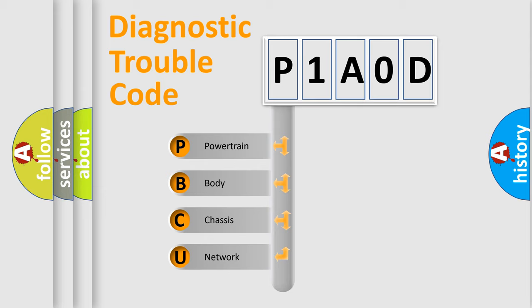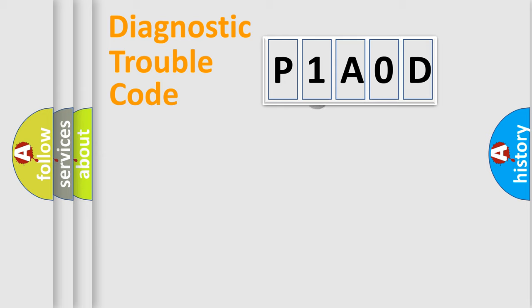We divide the electric system of automobile into four basic units: Powertrain, body, chassis, and network. This distribution is defined in the first character code.